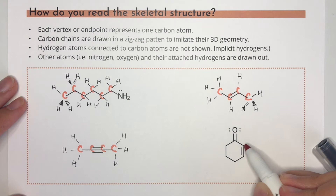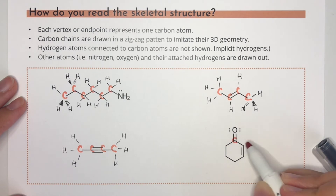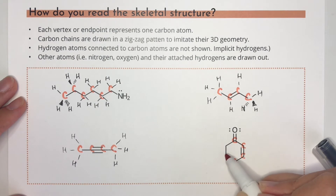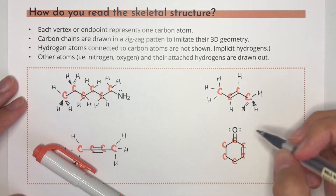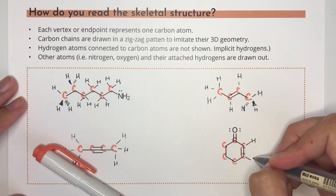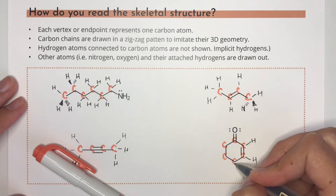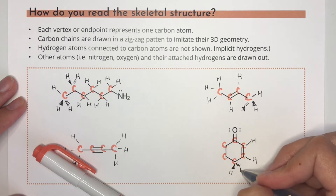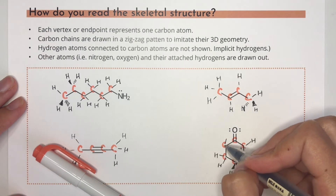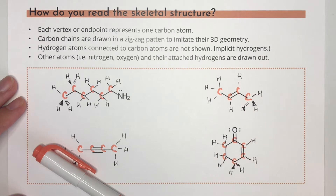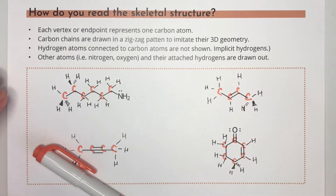Last, let's interpret this ring compound. There are six carbon atoms forming a ring, one for each of these points. The carbon atom with the ketone functional group attached has no implicit hydrogens because it already has four bonds. These two doubly bonded carbons have one implicit hydrogen each, and the rest of the carbon atoms have two implicit hydrogens. Because these carbon atoms are tetrahedral, the hydrogens point above and below the plane of the ring, just like shown on the bottom carbon using the wedged and dashed bonds. I hope these examples have helped you learn how to read and draw skeletal structures or bond line drawings.